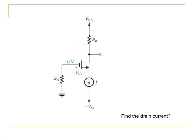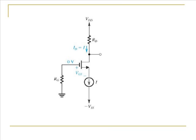The next step is to find the drain current. Why don't you pause the video and find out what the drain current is going to be. In a MOSFET, the drain current is the same as the source current. Therefore, the drain current is equal to the current set up by the constant current source, which is equal to I.